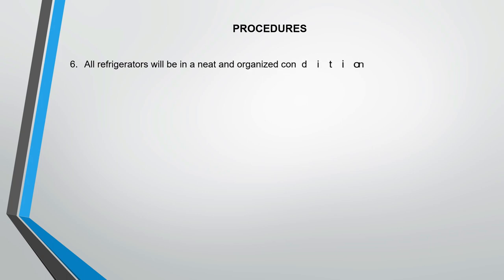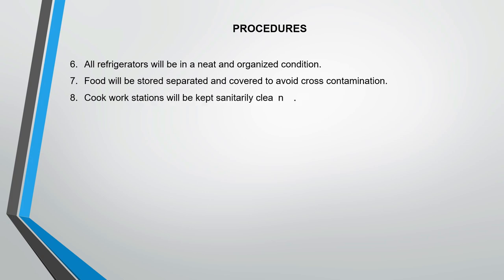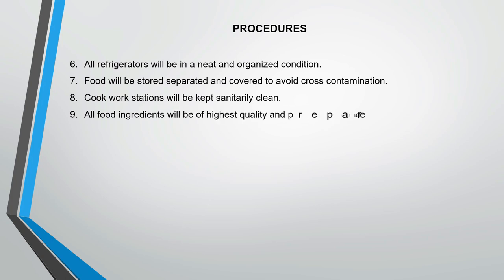Six: All refrigerators will be kept in a neat and organized condition. Seven: Food will be stored separated and covered to avoid cross-contamination. Eight: Cook workstations will be kept sanitarily clean. Nine: All food ingredients will be of the highest quality and prepared at peak freshness.